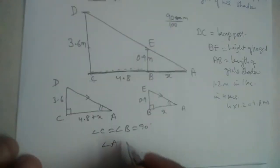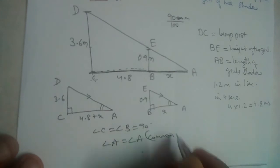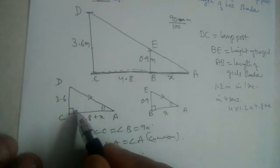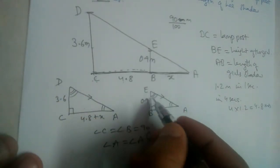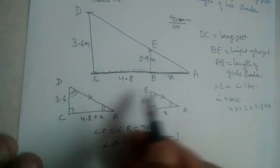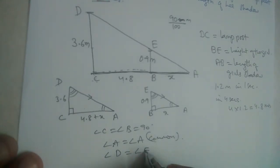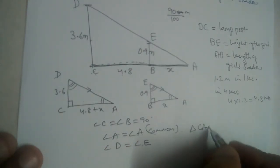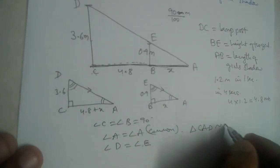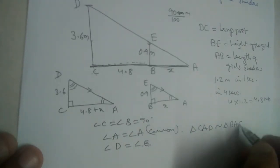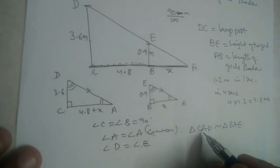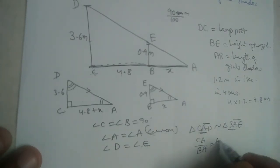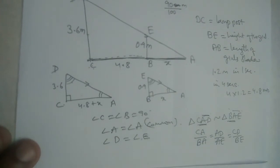Since angle A is common and both triangles have a right angle, by the angle-angle (AA) similarity criterion, the third angles are also equal. Therefore triangle DCA is similar to triangle EBA. Using corresponding sides: CA/BA = CD/BE, which gives (4.8 + x)/x = 3.6/0.9.